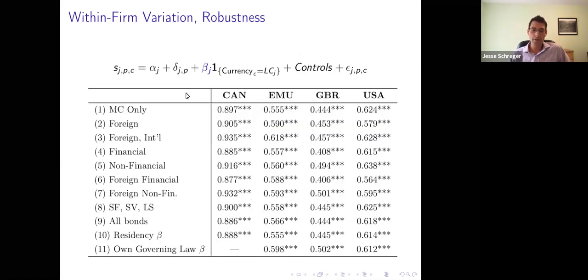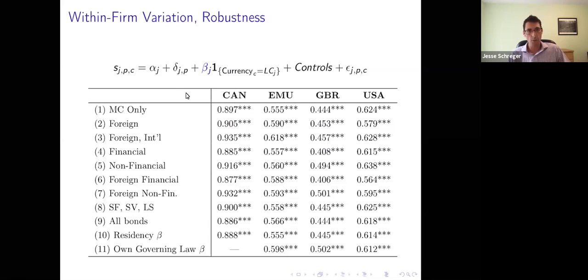Using the microdata, you can then ask what else at the bond level could explain this effect. We can run this exact same regression split for multi-currency issuers only, financial firms only, non-financial firms, foreign financial firms, foreign non-financial firms, structured finance, and sovereign nationals. We can control for the residency of where a security is issued and the governing law. Each of these characteristics forms the basis for trying to understand an investment portfolio.